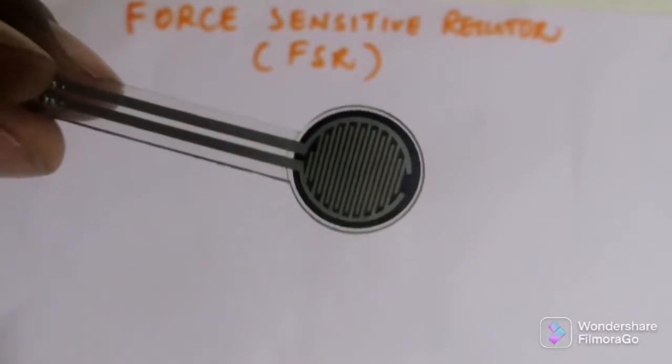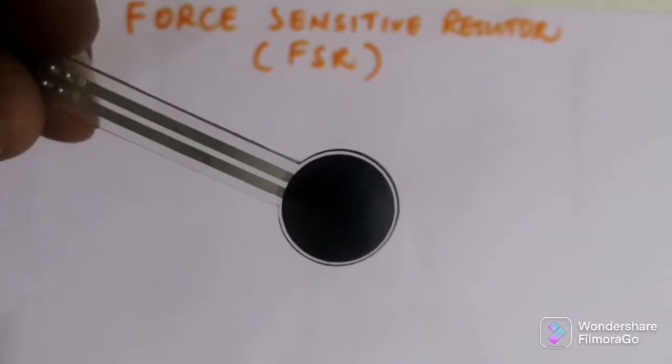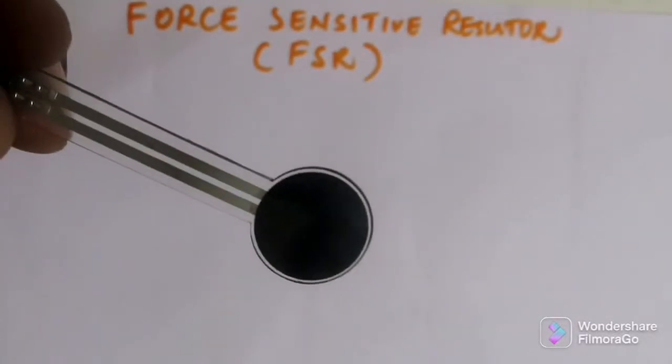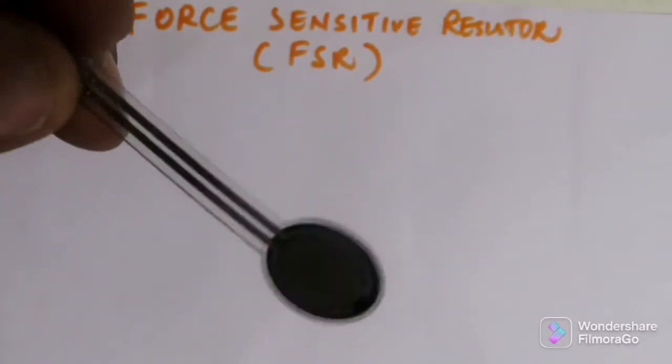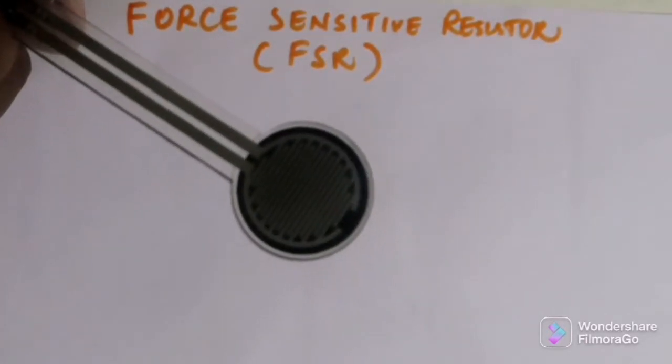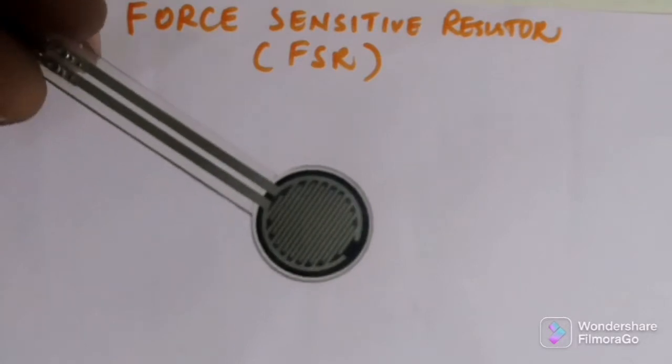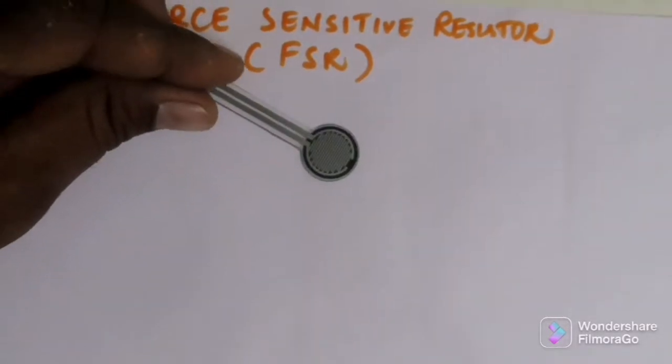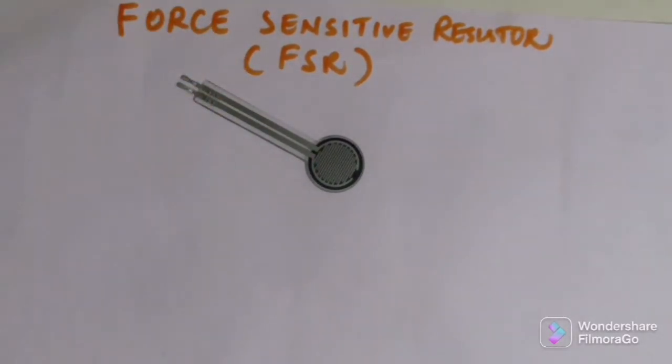That we call conductive silver traces. And one more, the black strip you can see, this one we call resistive carbon elements. One more, the transparent layer is there, that we call the base TPU film. It's made up with different flexible layers. When more it is pressed, the more resistive carbon elements touch the conductive traces and reduce the resistance.